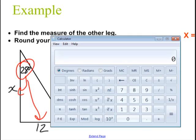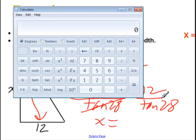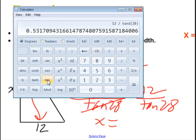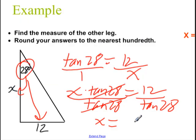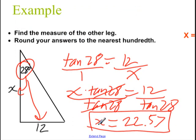Then divide both sides by the tangent of 28. That's just a number, so it works the same way as canceling anything else. Now I do 12 divided by the tangent of 28 on my calculator: I type 12 divided by, then 28 and press tangent, and I get approximately 22.57 if I'm rounding. So x is approximately 22.57.